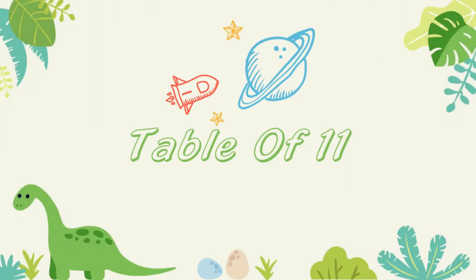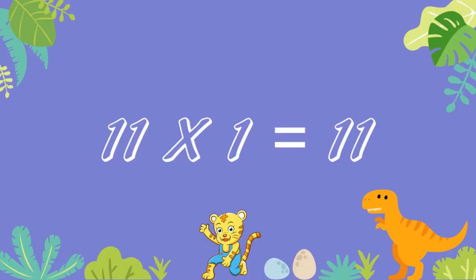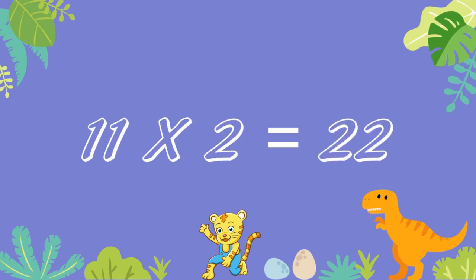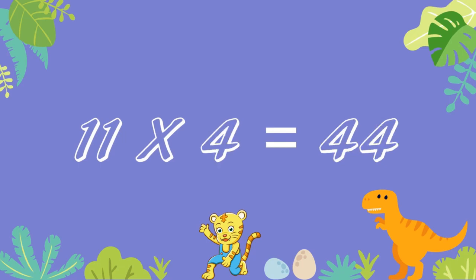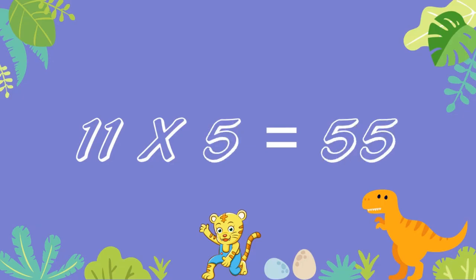Table of 11. 11 ones are 11. 11 twos are 22. 11 threes are 33. 11 fours are 44. 11 fives are 55.